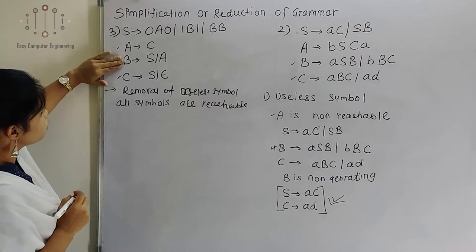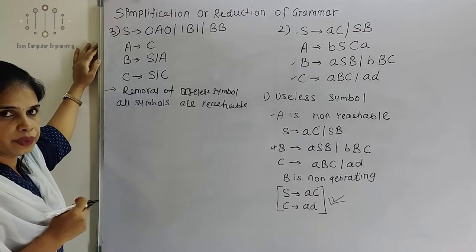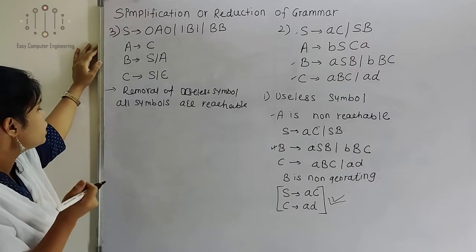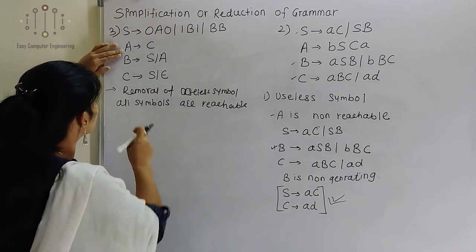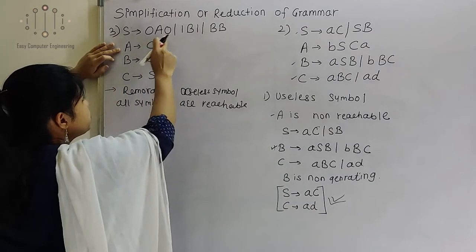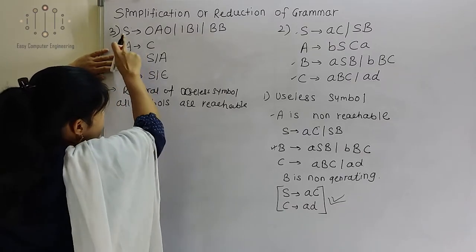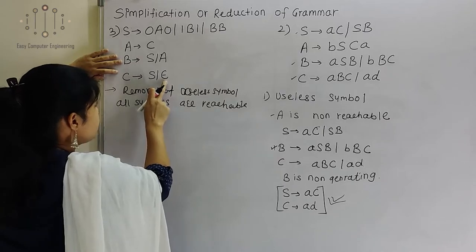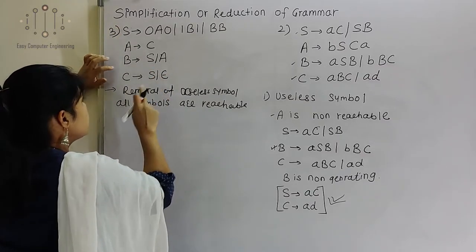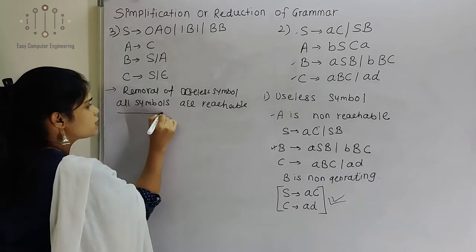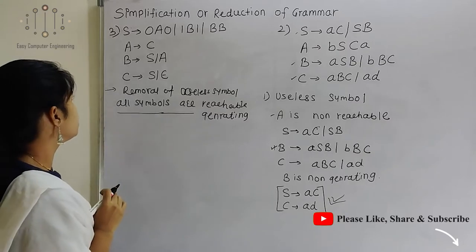Now second step: is there any non-generating symbol? Non-generating means directly or indirectly that symbol should have epsilon or terminals. From S we can have A and B. From A we can reach C, and C is having epsilon — so A and C are generating symbols. For B, B is giving S and A, and S can get the epsilon symbol indirectly. So all are generating symbols — all symbols are generating. No variable will be cut down from this grammar.